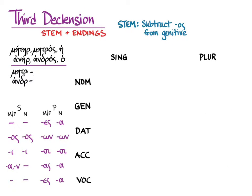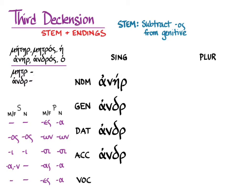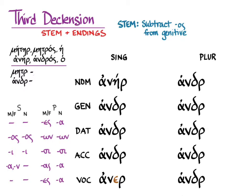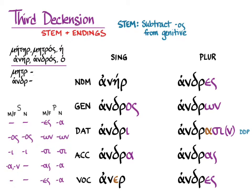Looking at ἀνήρ (man or husband), there is the long vowel grade in the nominative singular. In the rest of the singular — except the vocative — we use the zero grade stem, and the short vowel stem in the vocative singular. Adding the endings, this is actually correct: ἀνήρ keeps the zero grade throughout the paradigm, with the exception of the dative plural, where we again get that alpha added for pronounceability. The rest is quite regular with the zero grade stem.